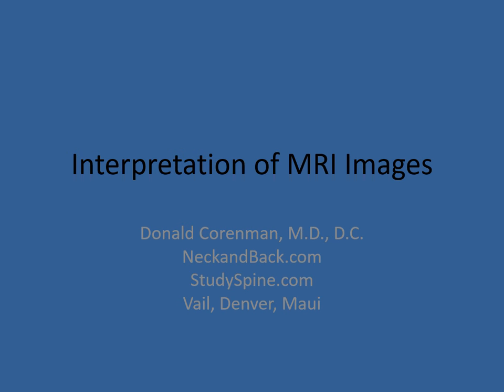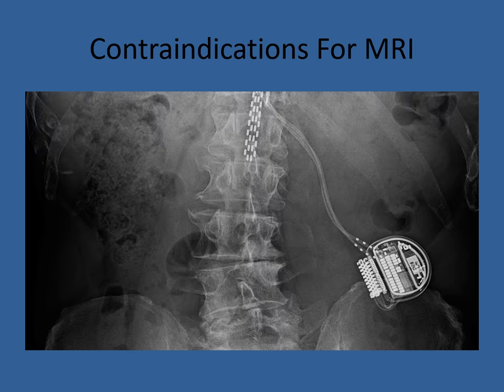Hello, this is Dr. Kornman. We're going to talk about how to interpret MRI images. There are contraindications for MRIs. Patients who have metal in their eyes, patients who have clips in their brain, patients who have spinal cord stimulators or diabetic pumps all need to find whether these are compatible with the MRI. This isn't your task, but it's important to have the MRI technician note about these so they can determine whether it's safe to have an MRI.